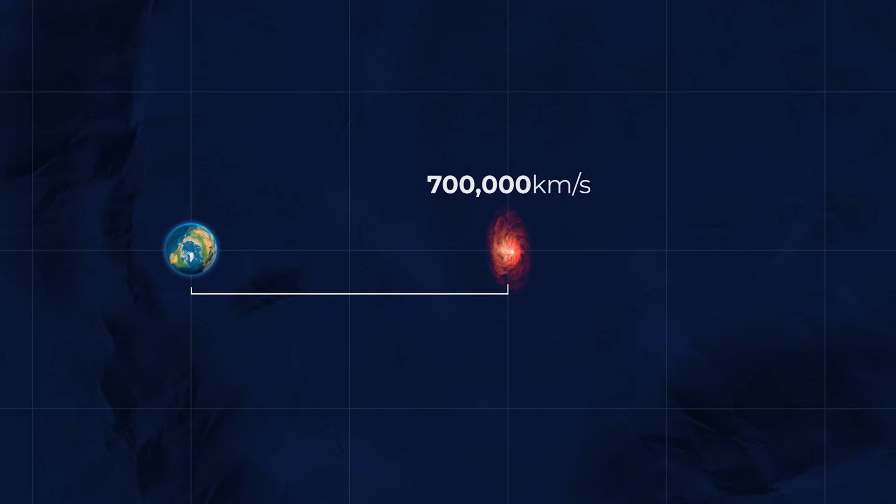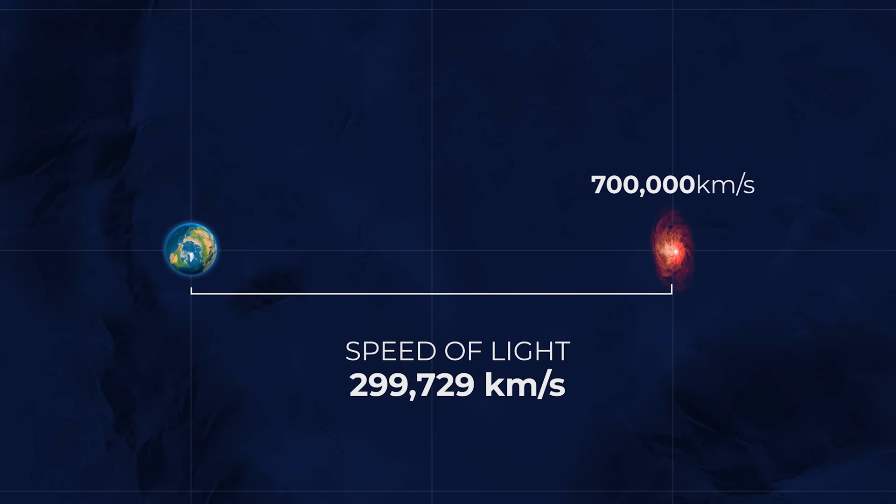But we're told that objects can't move faster than the speed of light. But that is only true for objects moving through space. This is where cosmological redshift comes in.